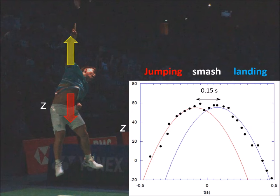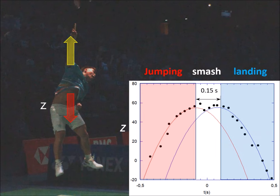During the jump phase in red, the curve corresponds to the half-ascending parabola. During the smash, the player remains at constant height for around 150 milliseconds. It's only after the smash that he begins to descend, where his curve describes the half-descending parabola.